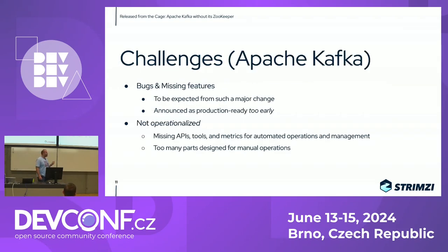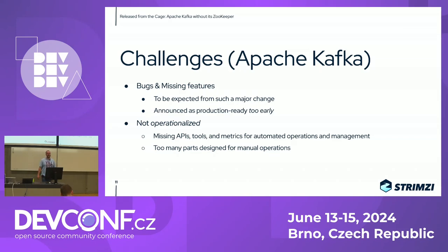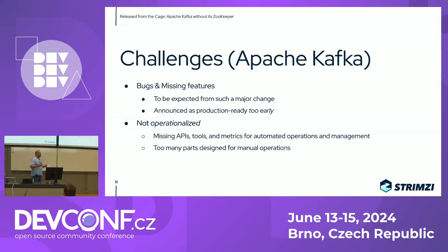That gives you an introduction to what KRaft means for Kafka and the ZooKeeper removal. I also want to talk about the challenges we faced in Strimzi while implementing this. Some are quite obvious — it's basically been going on for five years. It's not one huge PR that gets merged one day; there are many smaller steps, features implemented one by one. So there are a lot of situations where some feature is implemented but others are missing, requiring workarounds. Then you need to rework it next release to adapt to the next feature. With the amount of work happening in Kafka, there are also many bugs to deal with.